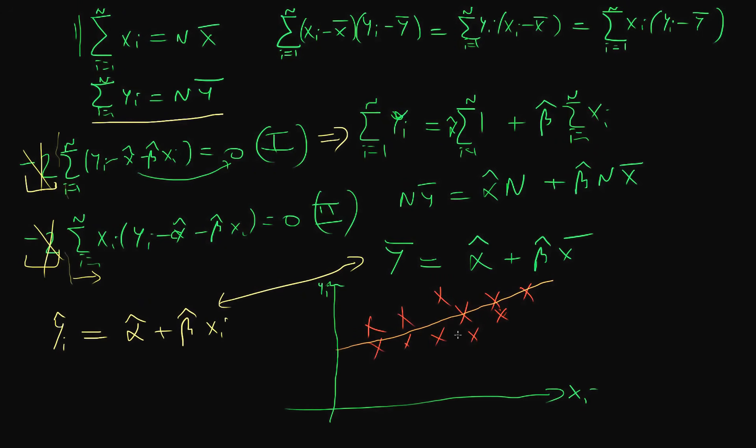and if I use the least squares criteria to choose alpha hat and beta hat, it tells me that our line of best fit is going to go through y bar and x bar, the sample means of both x and y.